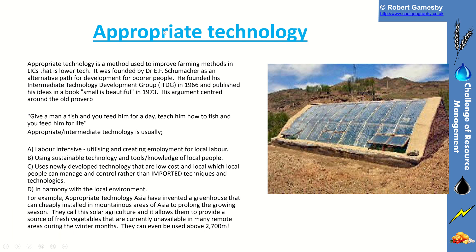A slightly less controversial option is appropriate technology — improving farmer methods using simple, low-cost technology. The idea follows the principle: if you give a man a fish, you feed him for a day; teach him to fish and you feed him for life. Appropriate technology tends to be labour-intensive, sustainable, low cost and local, and it doesn't damage the local environment. An example from Asia is a greenhouse that can be used in mountainous areas to prolong the growing season and allow fresh vegetables to be produced where they previously couldn't be, even at heights of over 2,700 metres.